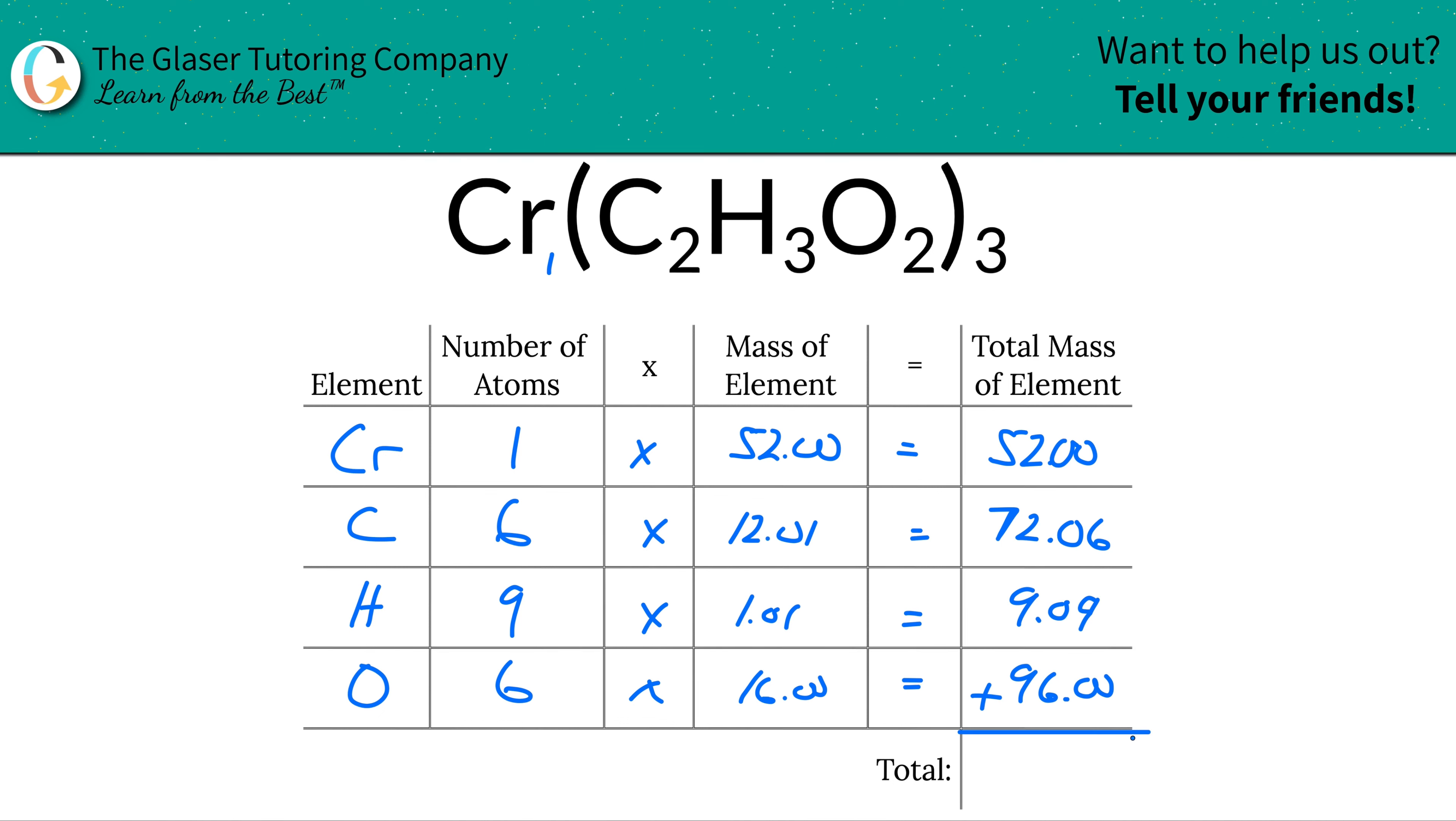To find the total mass of the entire compound, all you have to do is add up this particular column. So when you add that up, you get a total mass of 229.15. And since we're solving for molecular mass, the units here are in terms of AMU, atomic mass units.